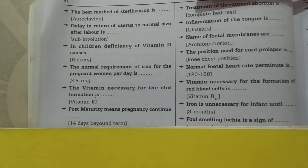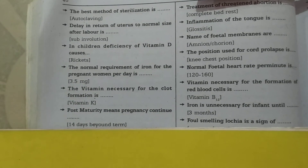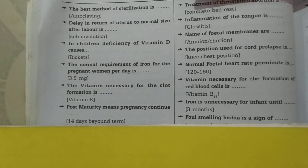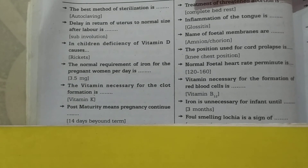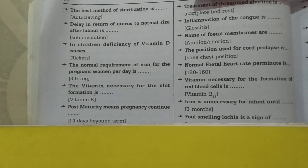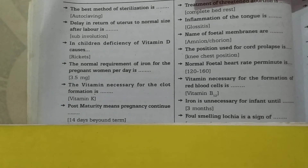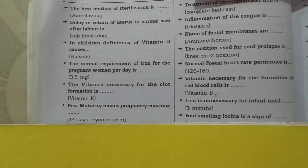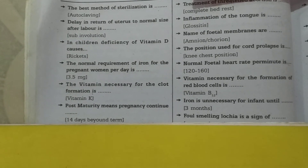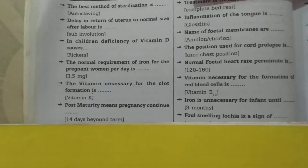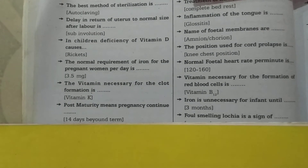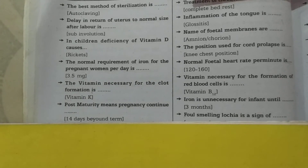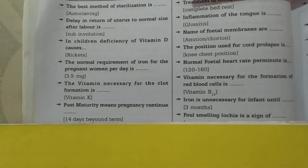The name of fetal membranes is amnion and chorion. The position used for cord prolapse is the knee-chest position. The normal fetal heart rate per minute is 120 to 160.